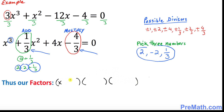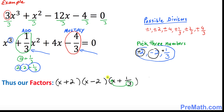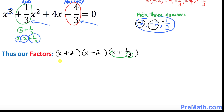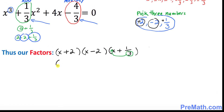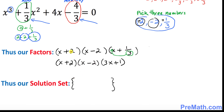Put x, x, and x in each parenthesis. The first number is positive 2, the next is negative 2, and the third is positive 1 over 3. Since 1 over 3 is a fraction with 3 in the denominator, move the 3 to the front. Our factored form is going to be: (x + 2)(x − 2)(3x + 1).